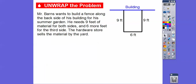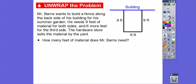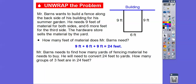We're going to use that table to help us solve some problems. Mr. Barnes wants to build a fence along the back side of a building for his summer garden. He needs 9 feet of material on both sides and then 6 more feet on the third side. The hardware store sells the material in yards only. So how many feet of material does Mr. Barnes need? He needs 9 plus 6 plus 9, which is 24 feet. Now Mr. Barnes needs to convert that 24 feet into yards.